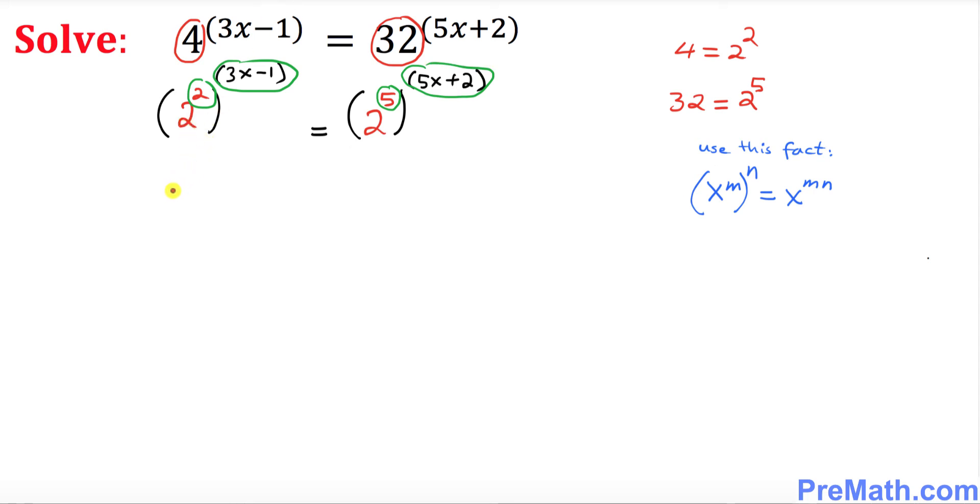We still have base 2 on both sides. This becomes 2 to the power of 2 times 3x minus 1, equals 2 to the power of 5 times 5x plus 2.